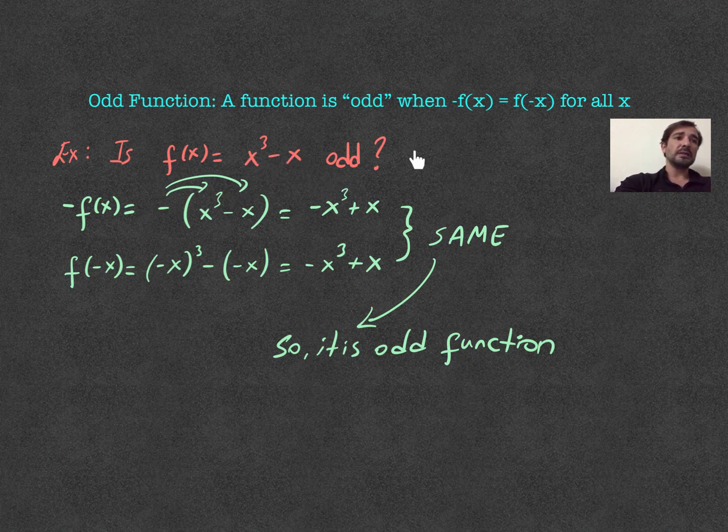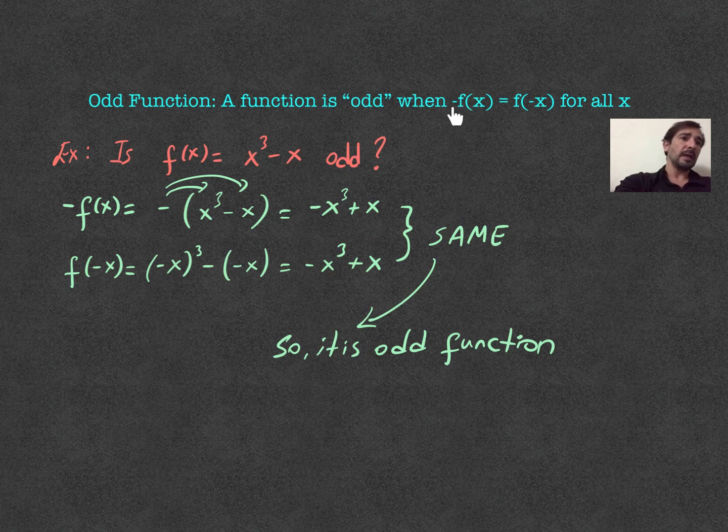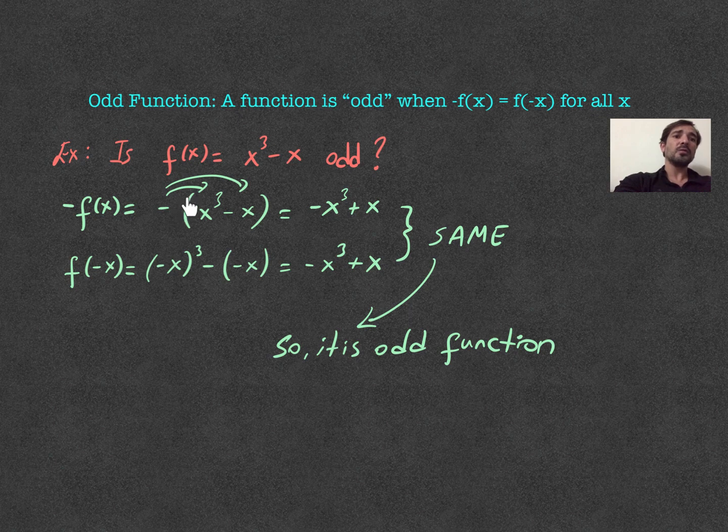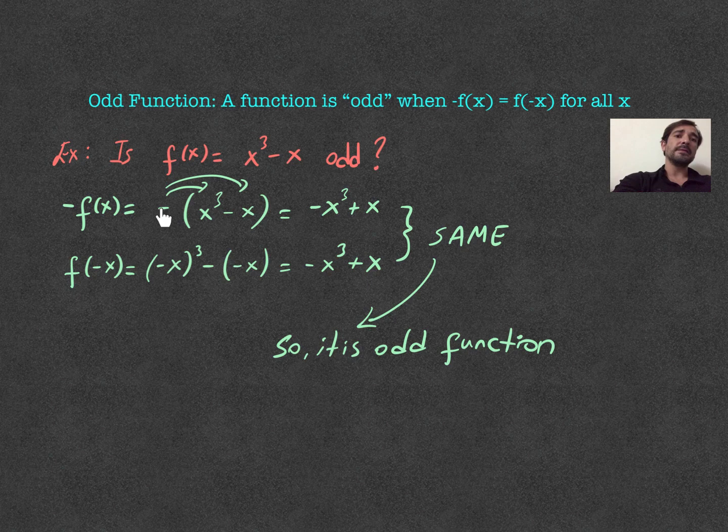So, for that reason, let me first take this one. f negative f of x. Which means I just have to put negative sign in front of the bracket. Okay, as you see here.